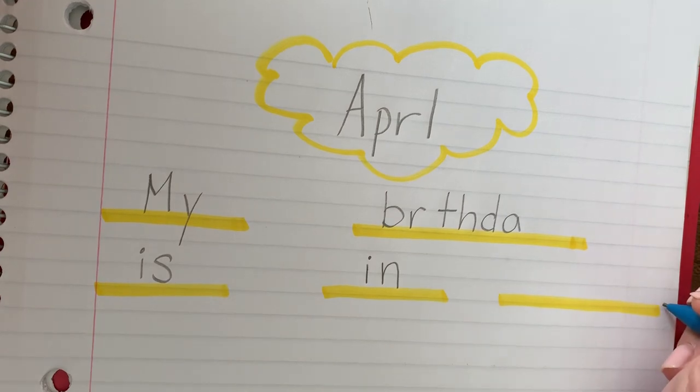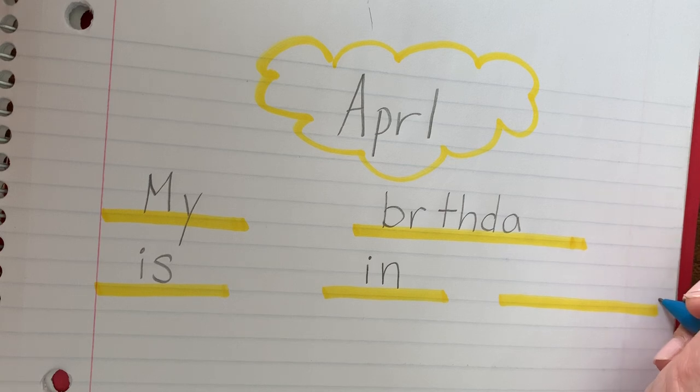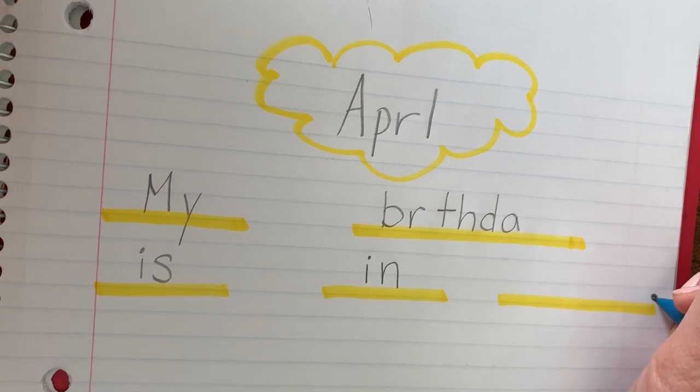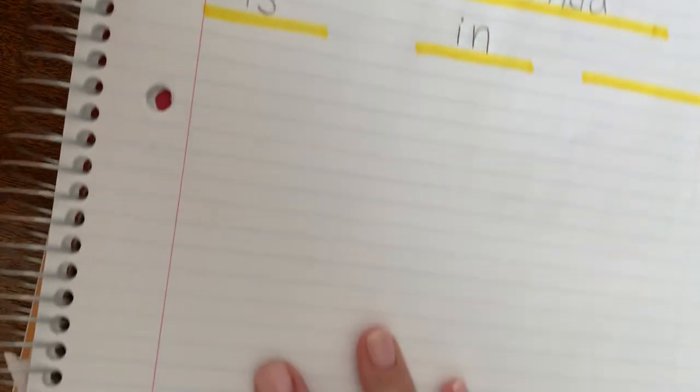And then what comes at the end of your sentence to show Ms. Frank you're done. If you said a period, you're right. Alrighty. Go ahead and illustrate on the bottom so that you can show me what you want to do on your birthday or who's going to be at your birthday. And I hope you enjoyed today's lesson. Love and miss you guys. Bye.